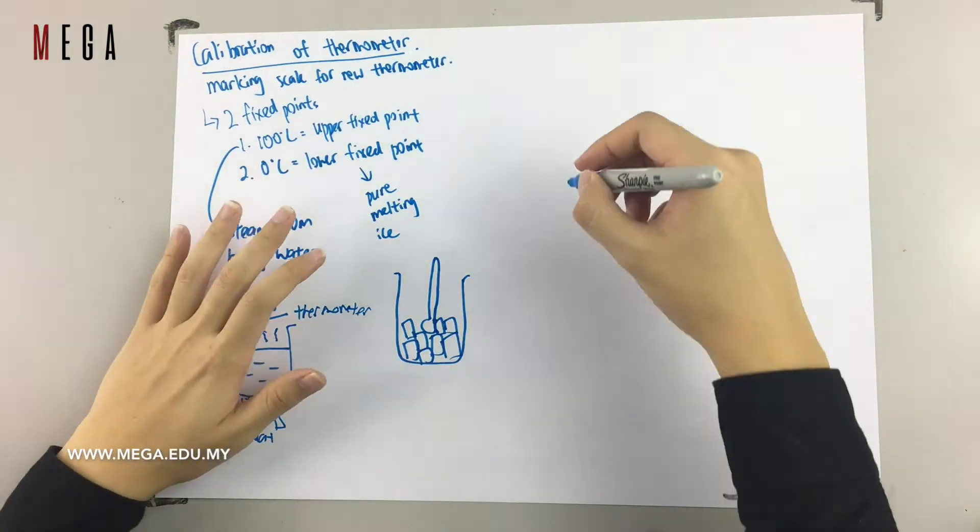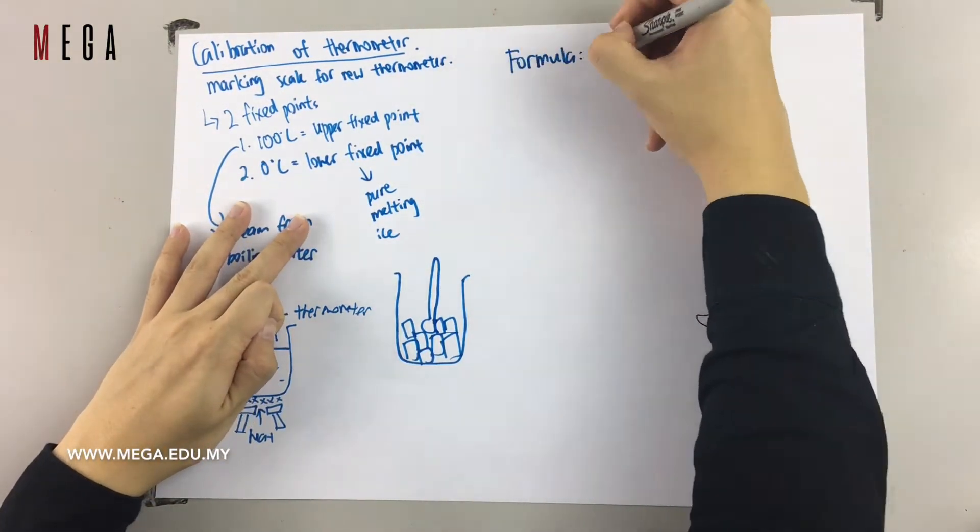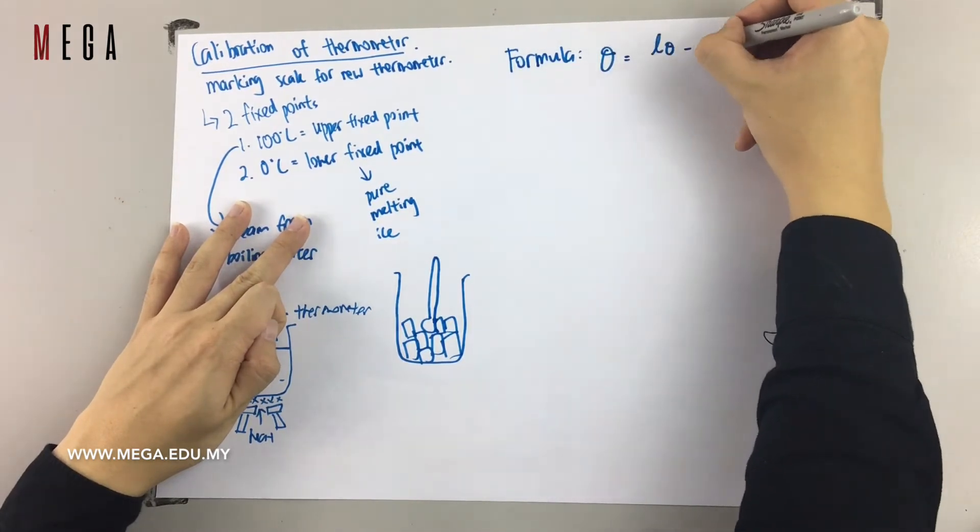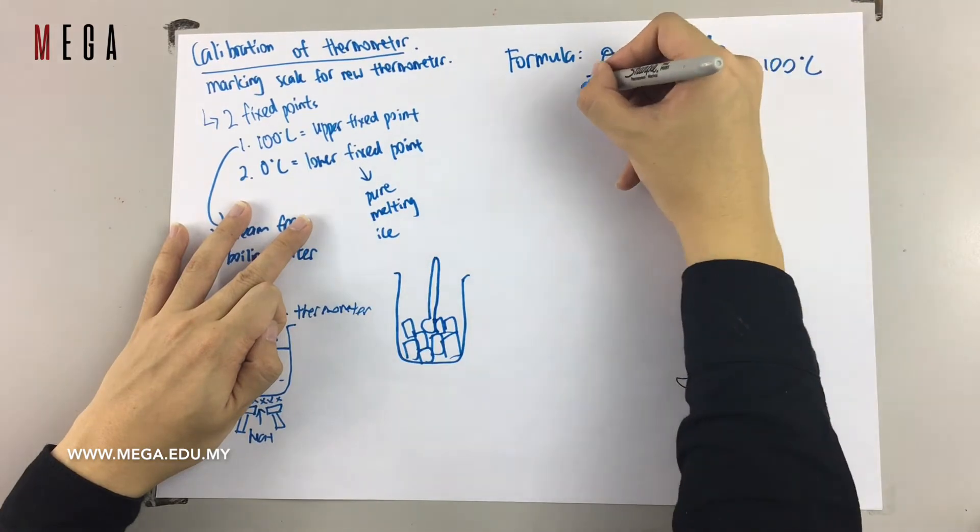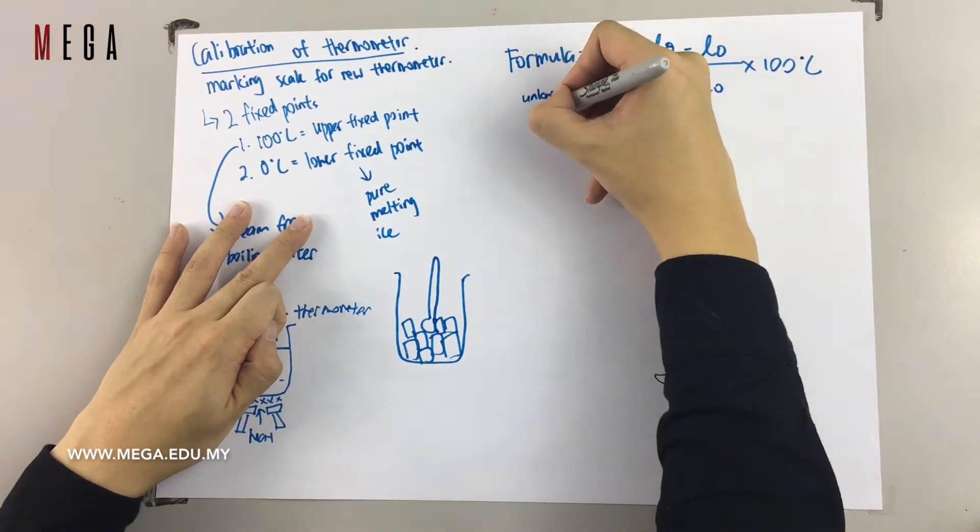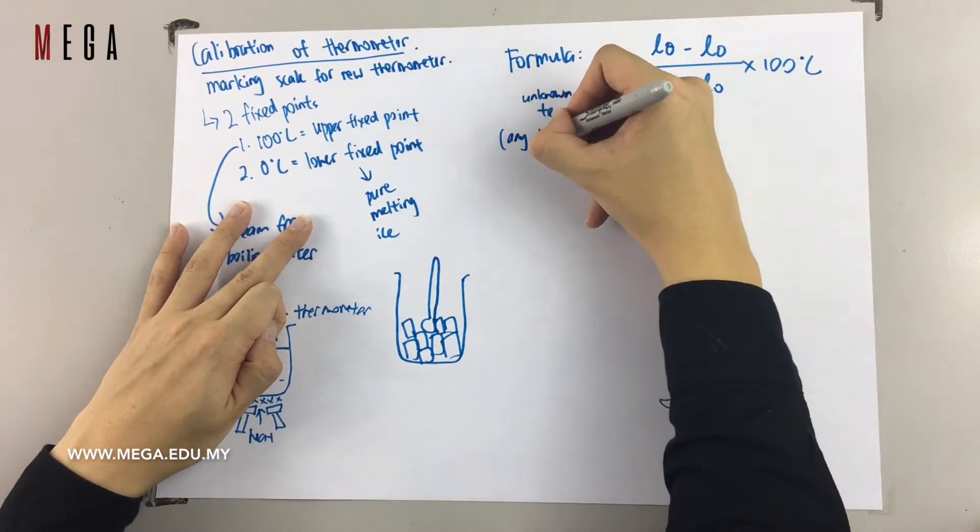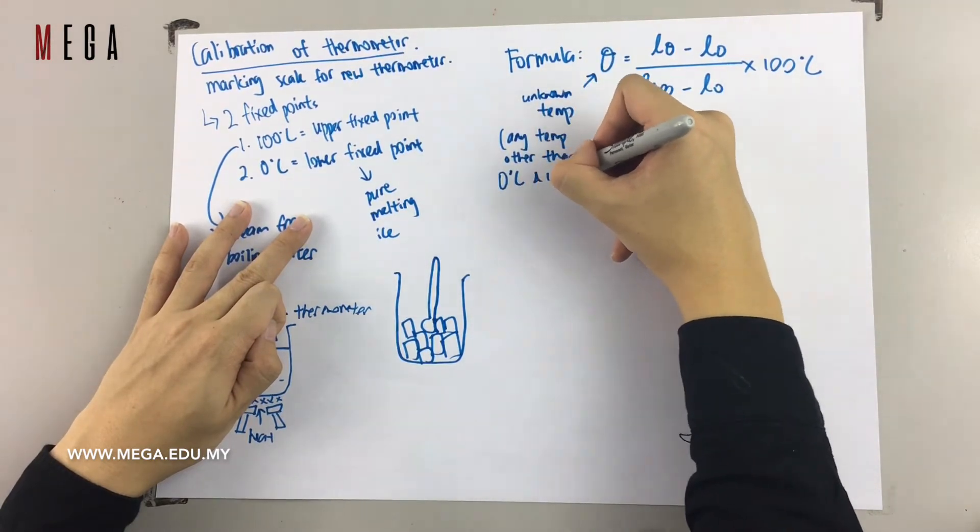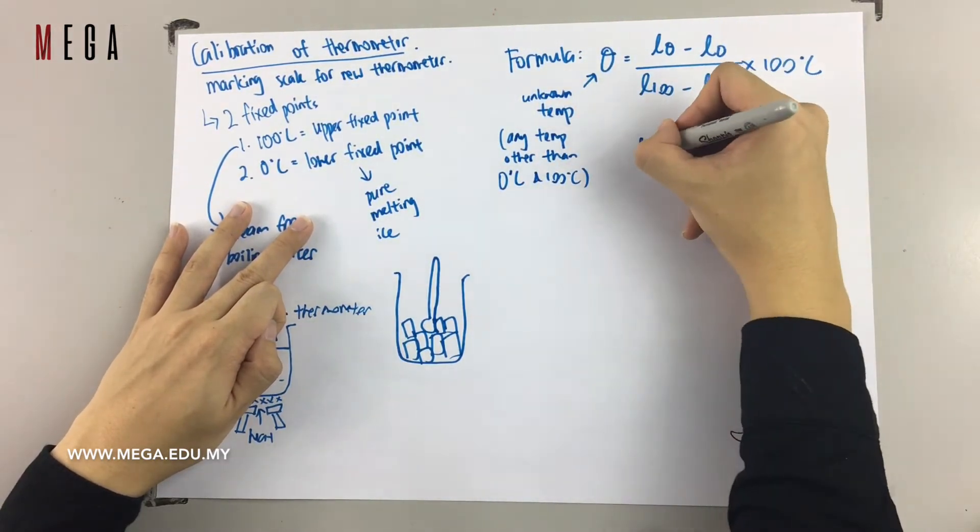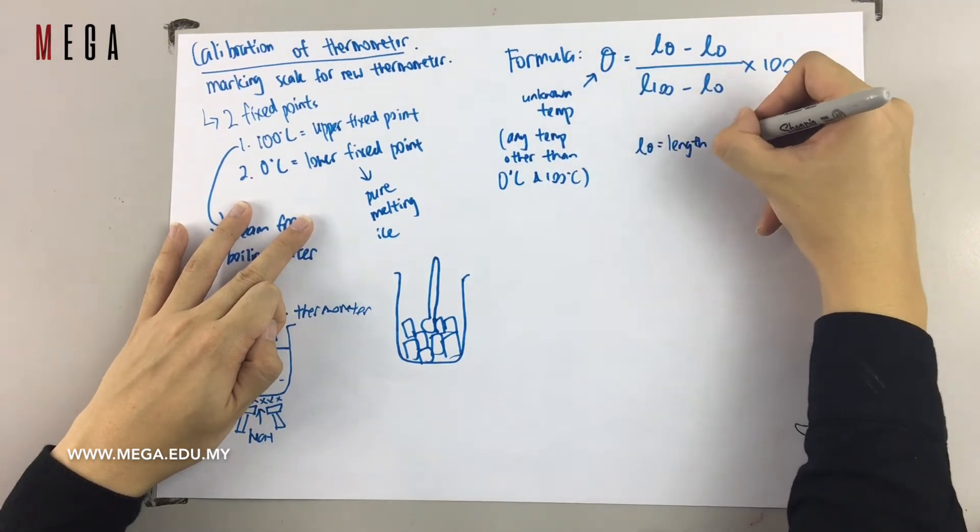After we have taken the length of the thermometer when it is at pure melting ice and steam from boiling water, now we need to go to the calculation part. So we have to memorize this formula where theta equals to L theta minus L0 over L100 minus L0 times 100 degrees Celsius.